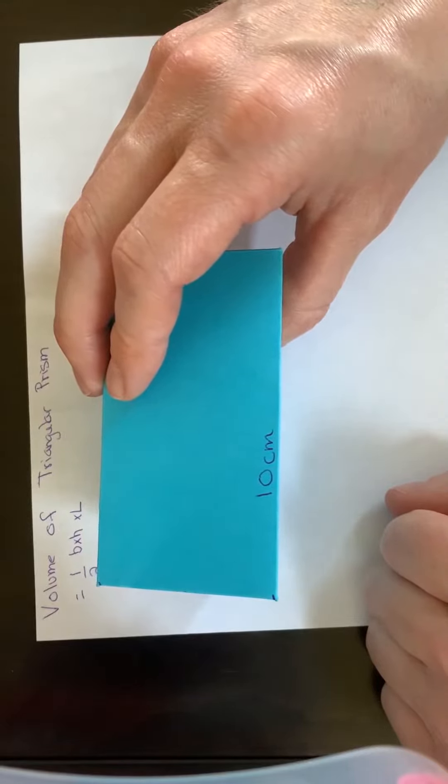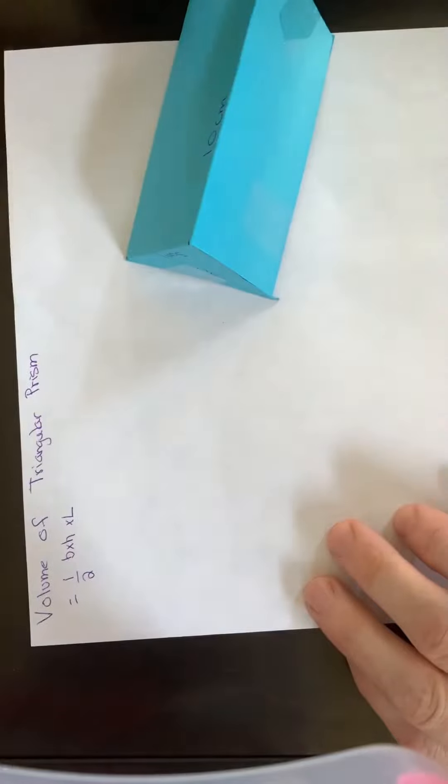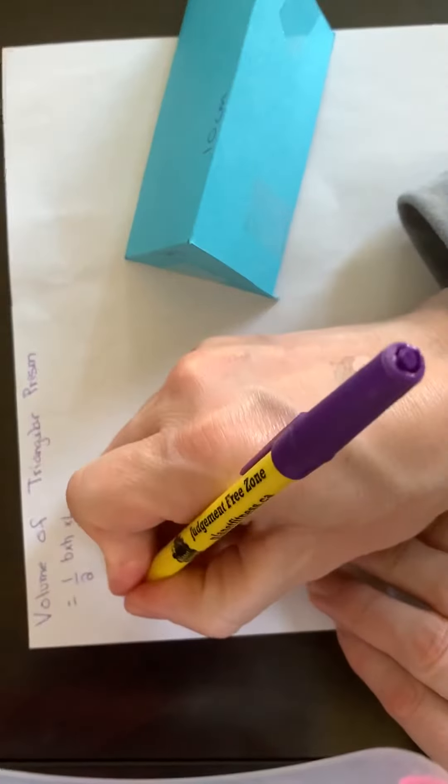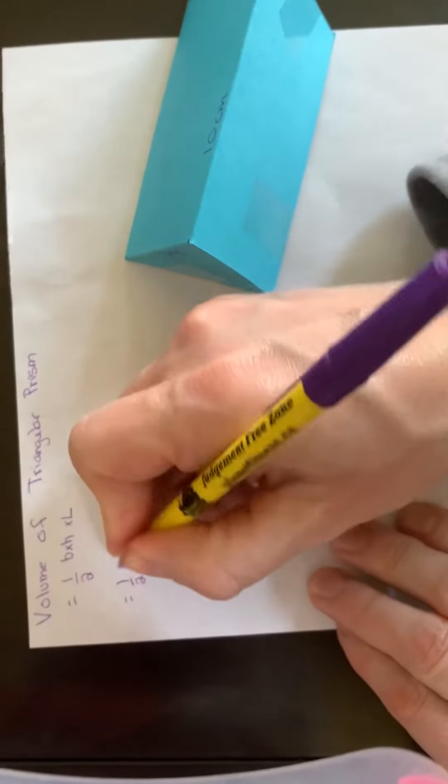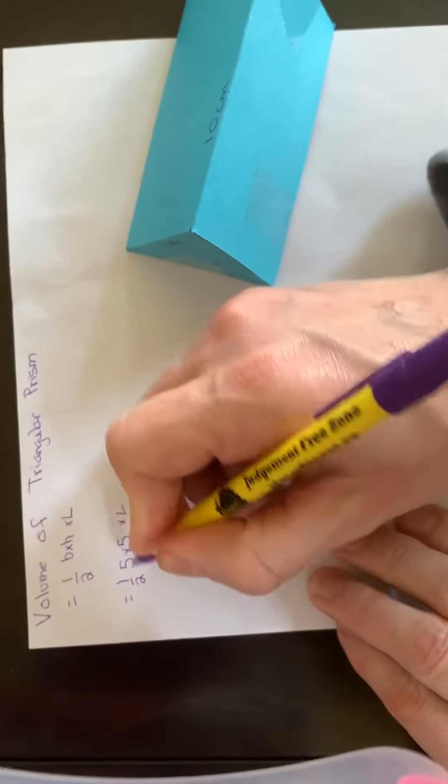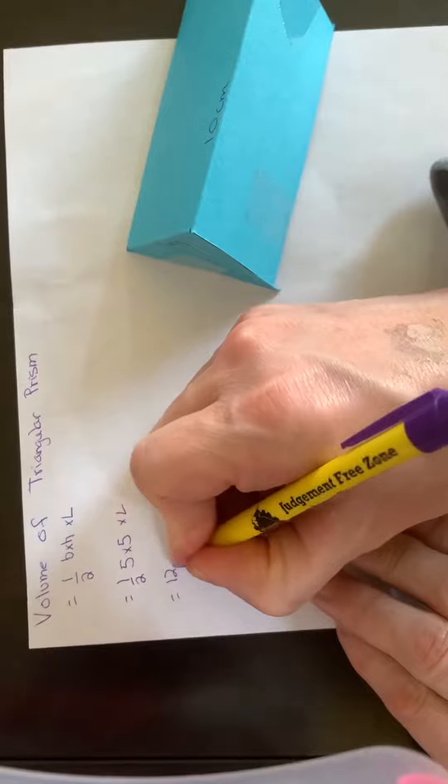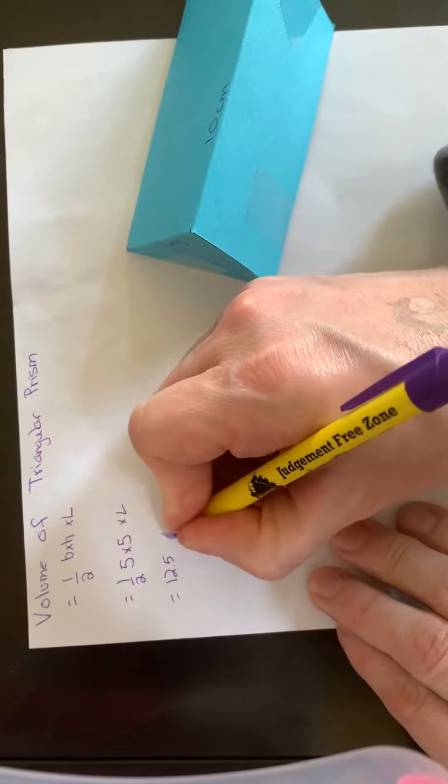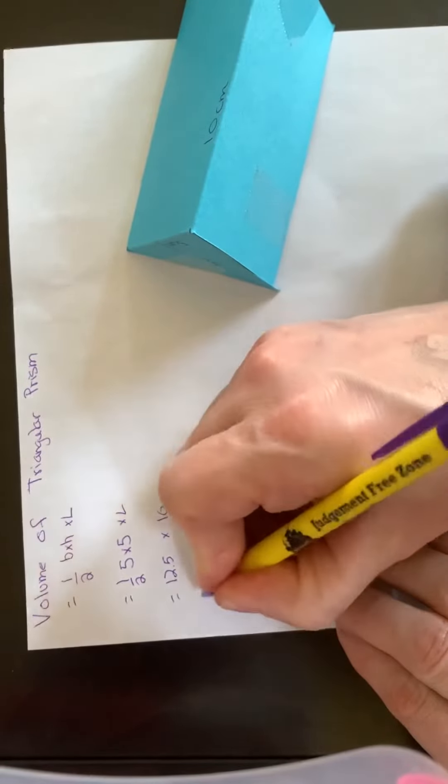I can also write it like this: one-half times my base, which was 5 times 5, times the length. This works out to 12.5 times my length of 10, and I get 125 centimeters cubed.